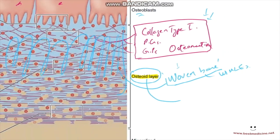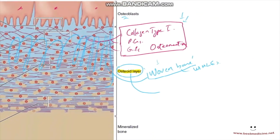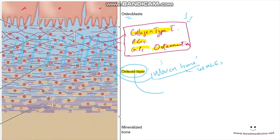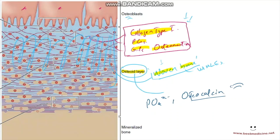After the woven bone and osteoid layer are formed, the osteoblasts start releasing ossification factors to mineralize the woven bone. These include matrix vesicles containing phosphate ions (PO₄) and the glycoprotein osteocalcin, which pulls in calcium.